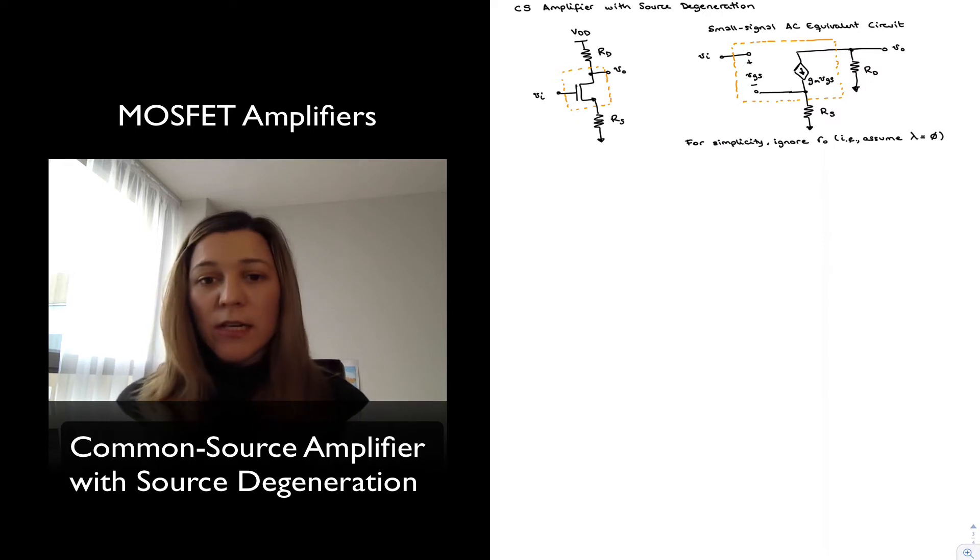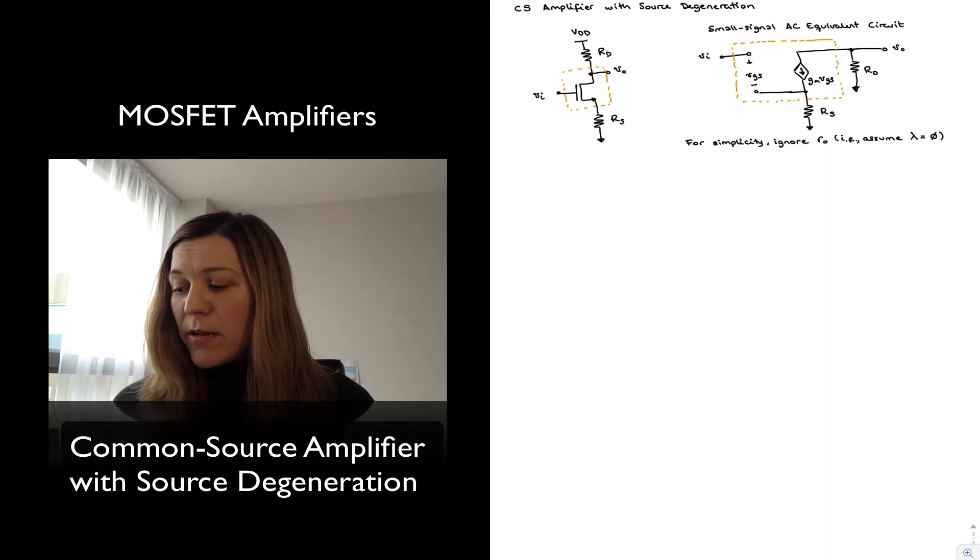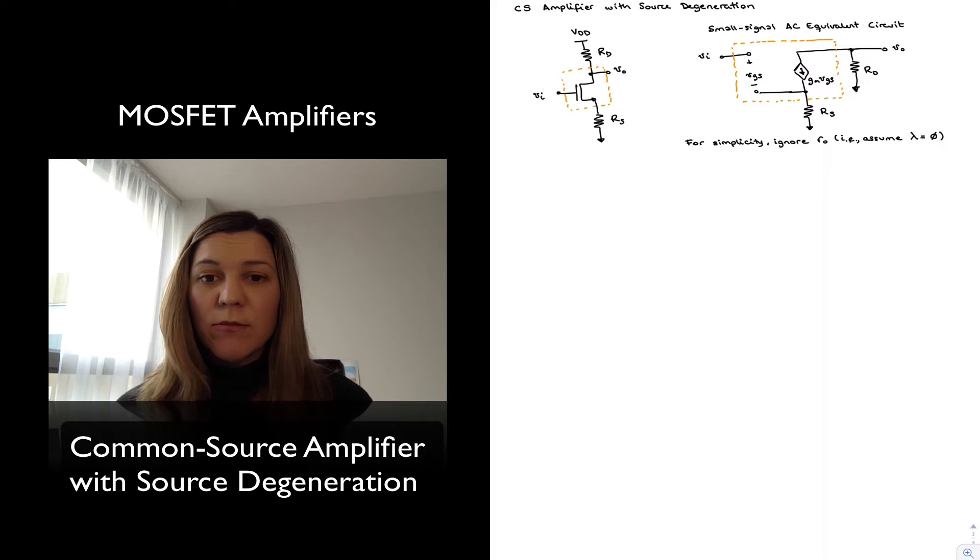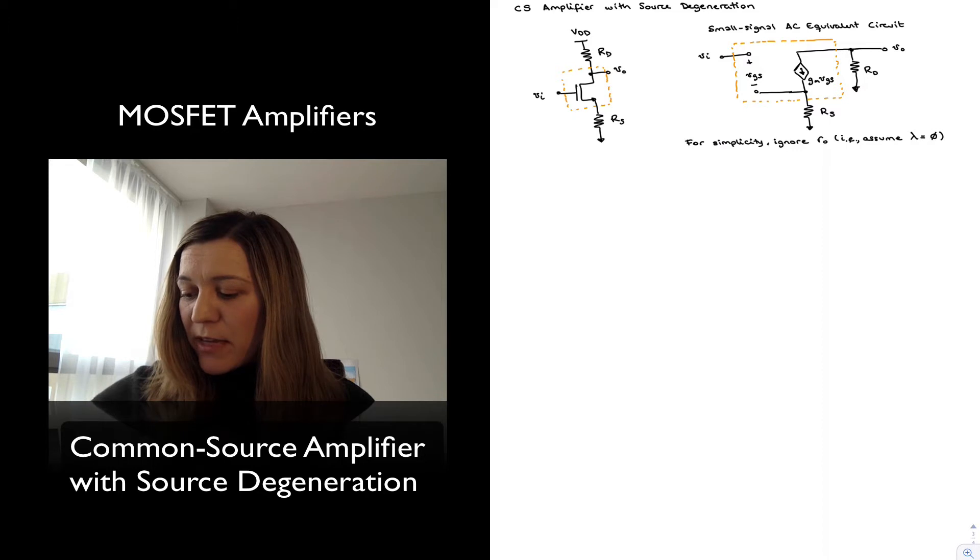My small signal AC equivalent circuit is also very similar. I have included my RS resistor and for simplicity I'm going to ignore the effect of little r0 and just assume that lambda is equal to zero, meaning that I'm going to ignore the channel length modulation effect. And that's going to simplify my calculations and give me a fairly good approximation.